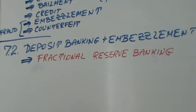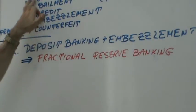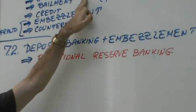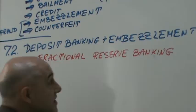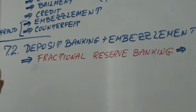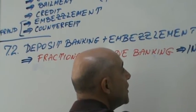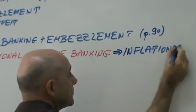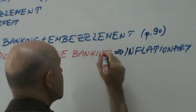Fractional reserve banking means there are more notes, more warehouse receipts, or more gold certificates than the actual commodity. The most important property of fractional reserve banking, with tremendous consequences, is that it is inflationary. That's on page 93.